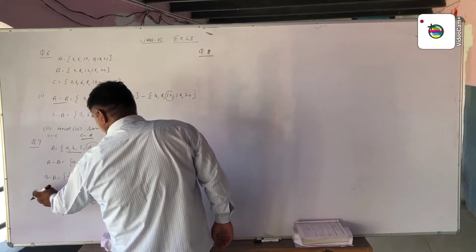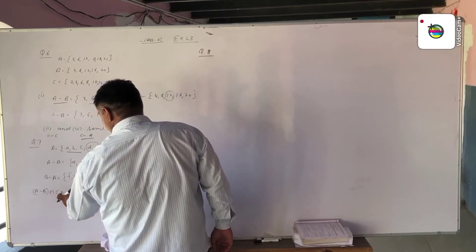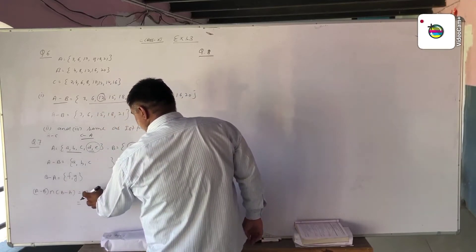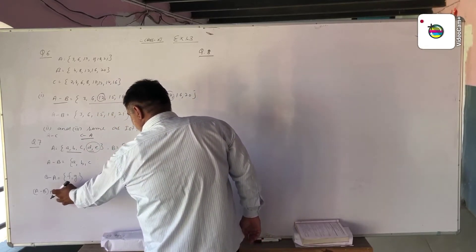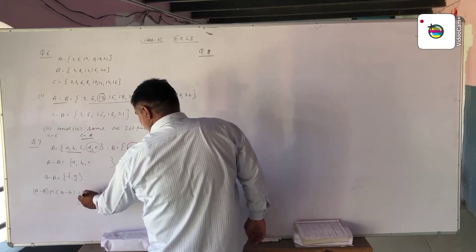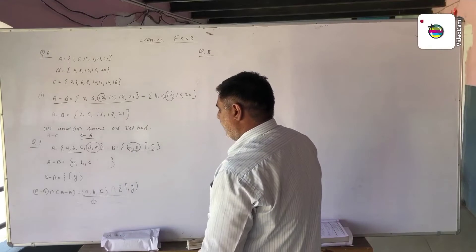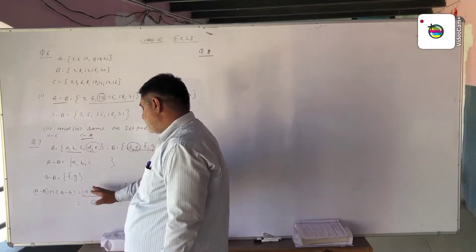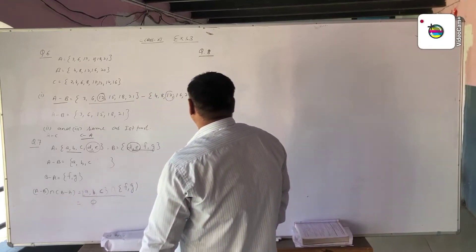Now we find (A difference B) intersection (B difference A). A difference B is {A, B, C} and B difference A is {F, G}. There are no common elements in both these sets, so the intersection of these sets is the empty set.